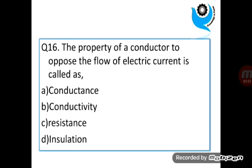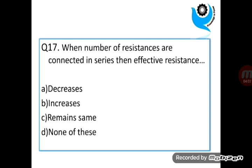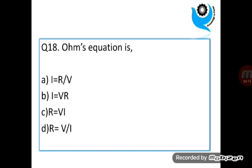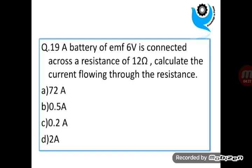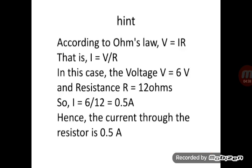Question 16. The property of a conductor to oppose the flow of electric current is called as Resistance. Question 17. When number of resistances are connected in series then effective resistance dash. Increases. Question 18. Ohm's equation is. Answer is D. Question 19. A battery of EMF 6V is connected across a resistance of 12 ohm. Calculate the current flowing through the resistance. Answer is B. Hint is given.